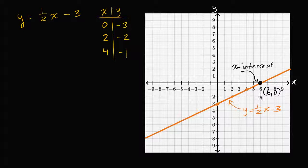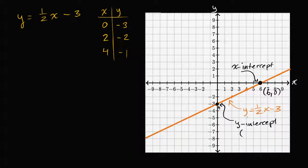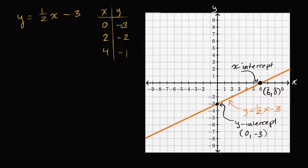Now what about the y-intercept? Well the y-intercept is this point right over here — this is where you intersect, or intercept, the y-axis. The y-intercept is at the coordinate that has a zero for the x-coordinate. X is zero here and y is negative three. X is zero and y is negative three. This was actually one of the pairs that we first tried out.